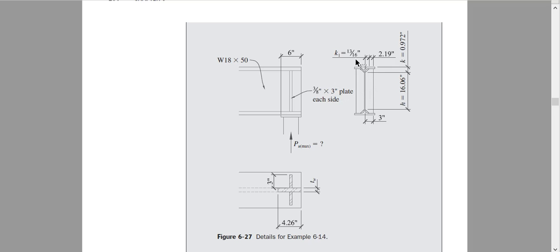The section properties are given: K1 is 13/16, the plate width is 3 inches, and the thickness is 3/8 inch. The height of the plate is 16.06 inches, which is the total depth D minus K at the top minus K at the bottom.